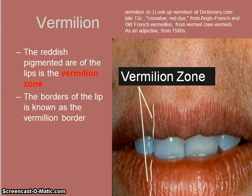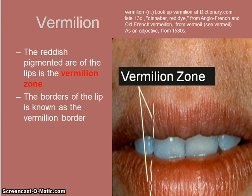The vermilion is the reddish pigmented area of the lips. What we know as the lips is referred to as the vermilion zone, and vermilion just means red. The vermilion border is the outer edge of the lips where women put on their lip liner. Age and sun damage can make the vermilion border indistinct or irregular.